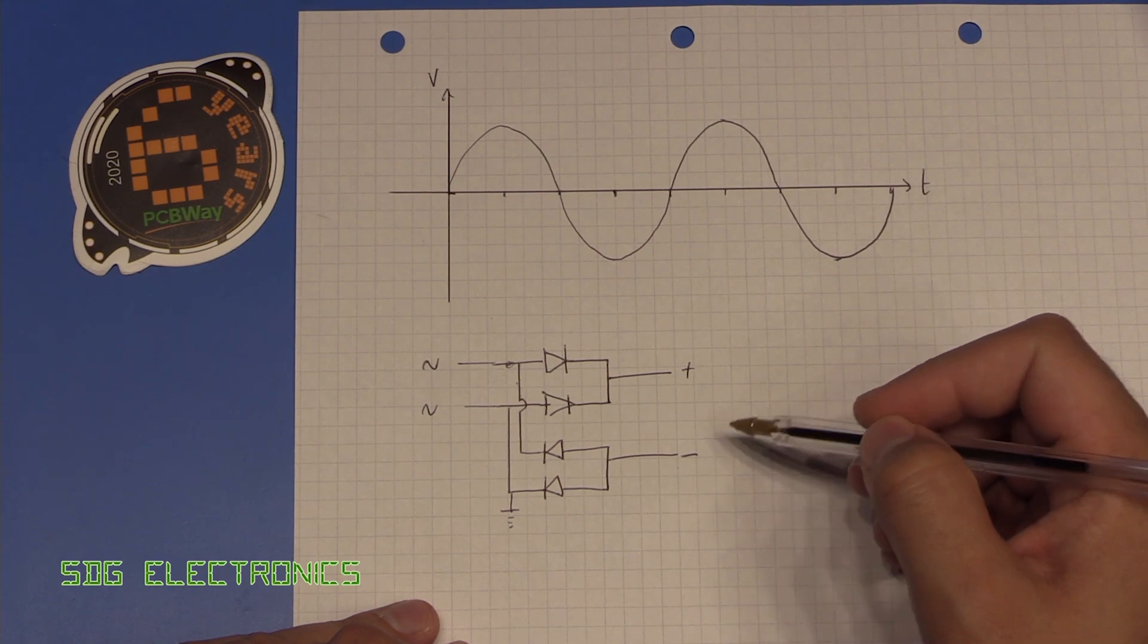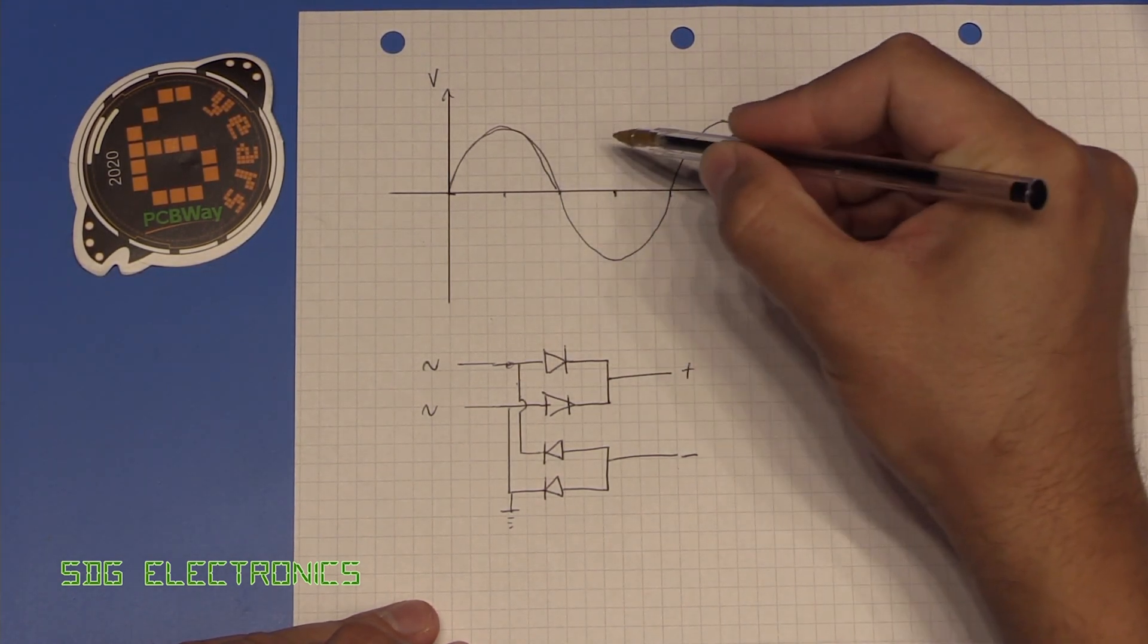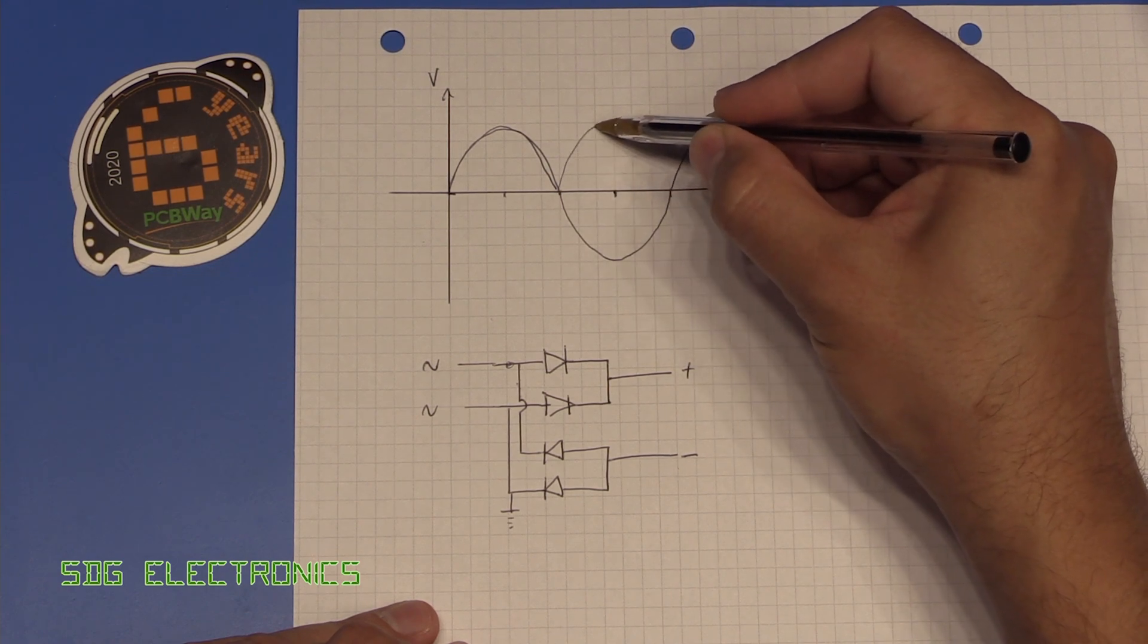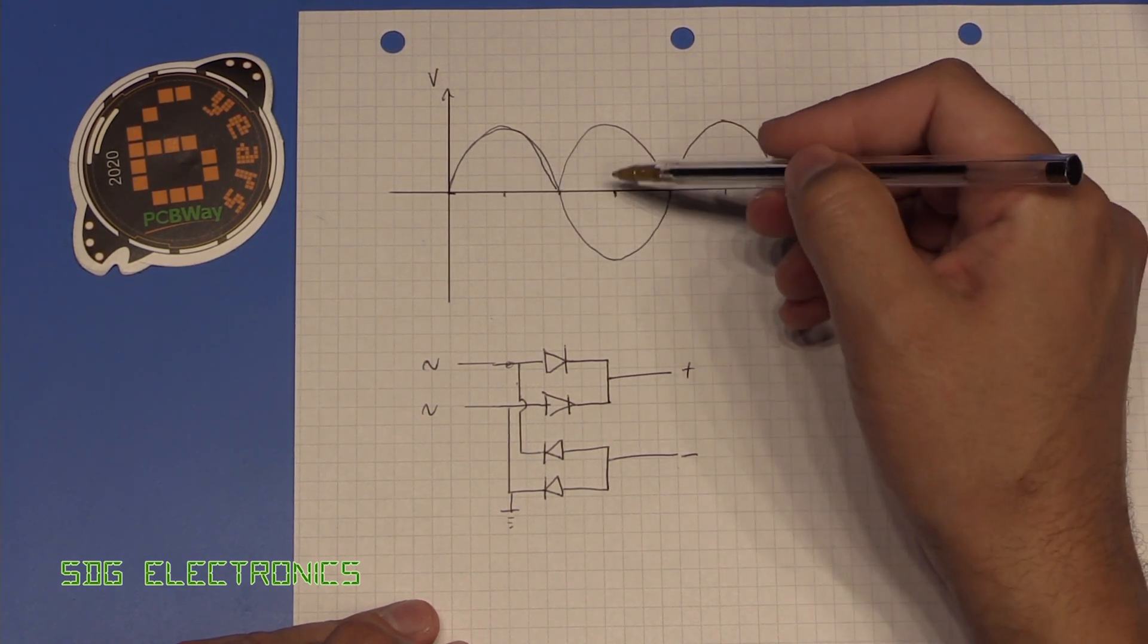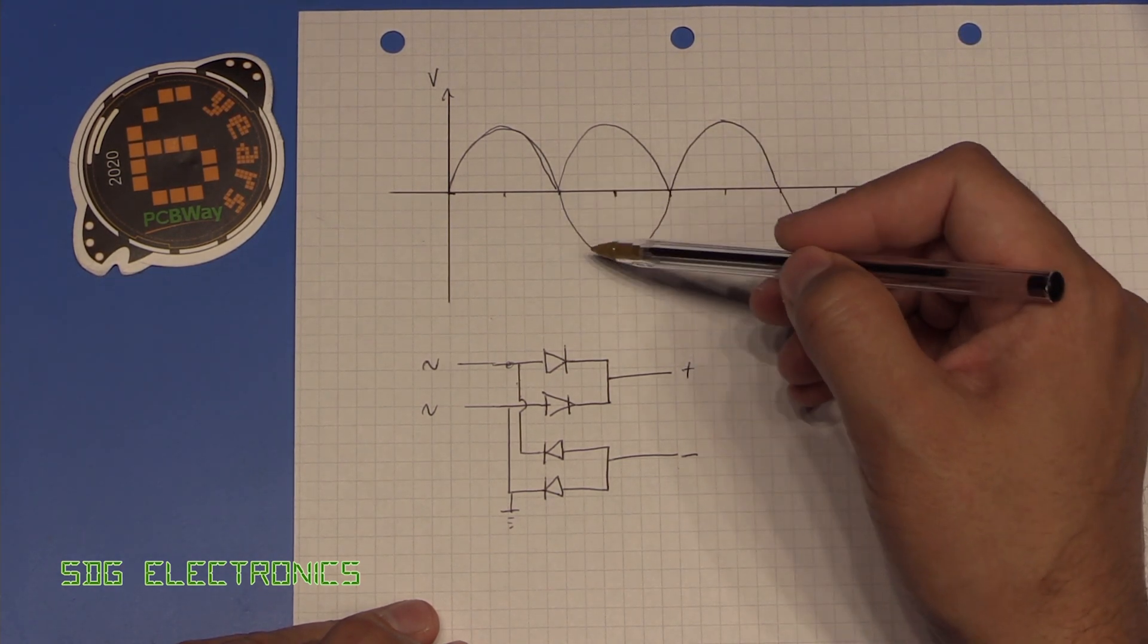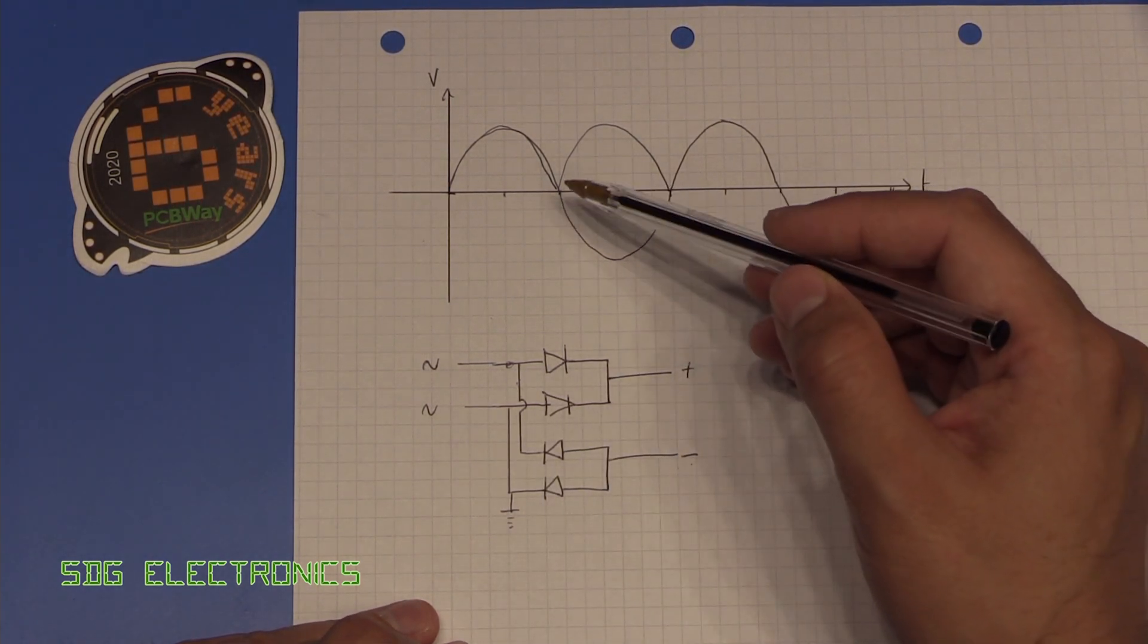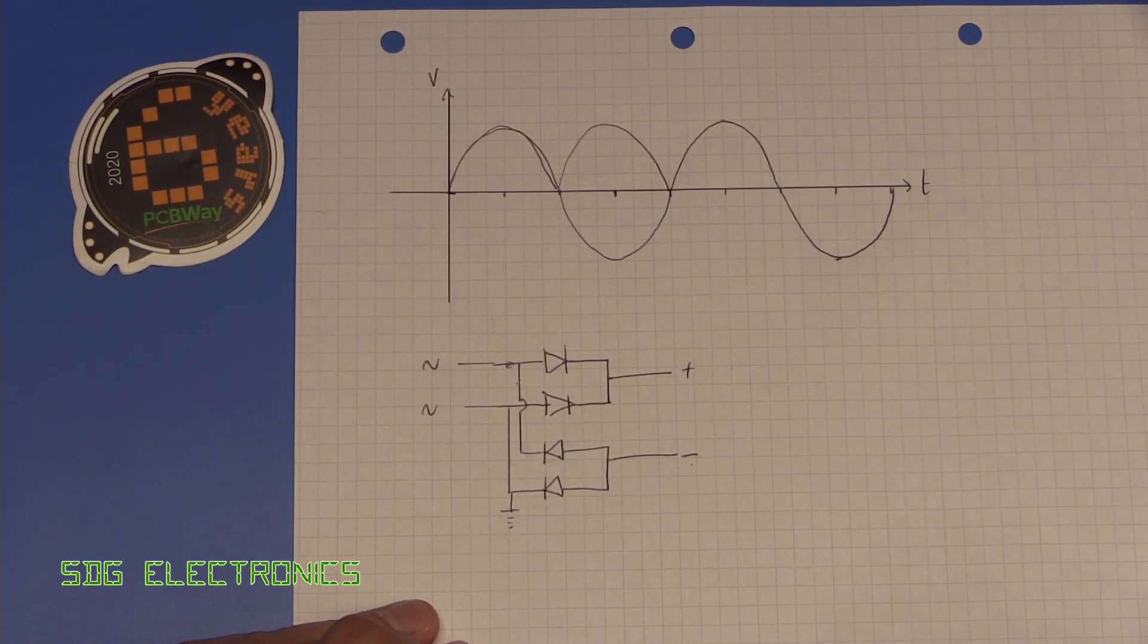What you'd see at the output is basically the same signal here, but on the negative half of the waveform you'll see it on the positive side here. So basically it keeps the output always positive going. That point where it would normally go negative, the diodes work in the opposite direction and it allows us to fully rectify the output.